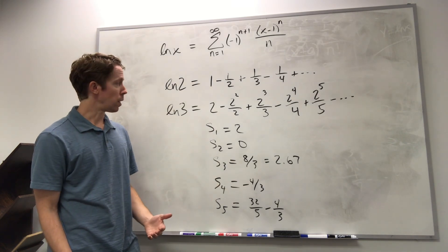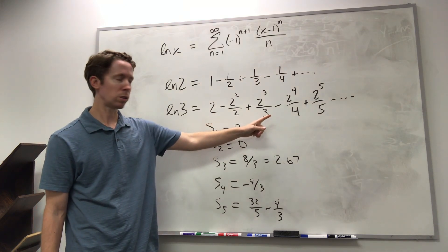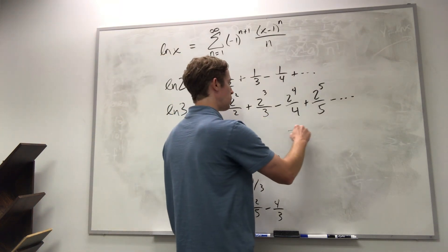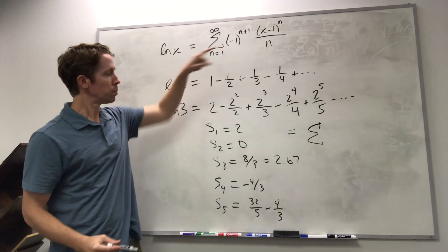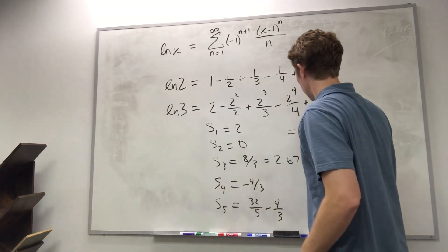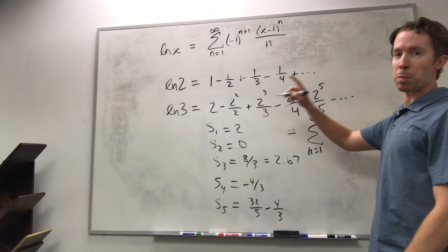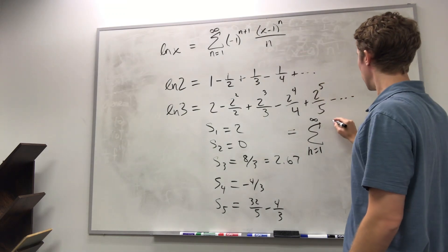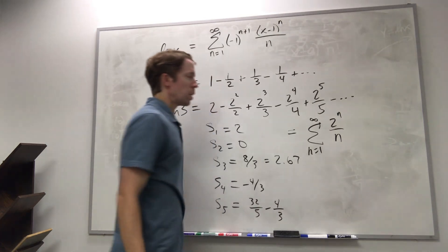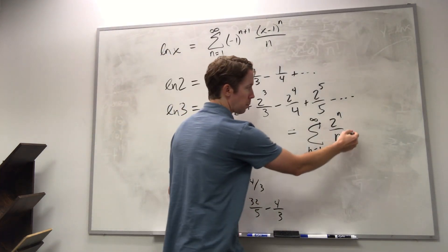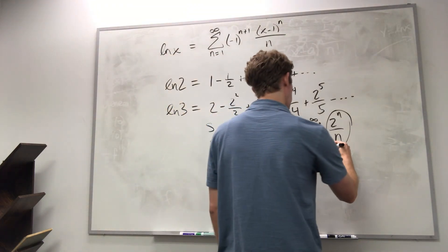It turns out that there's a quick test for saying that something like this will diverge. So if we write it in this form, in the summation notation, it's the sum from n equals one to infinity, and then I plug in three for x, I get two to the n over n. Oh, I left out the minus one to the n plus one, so let me put that back in.